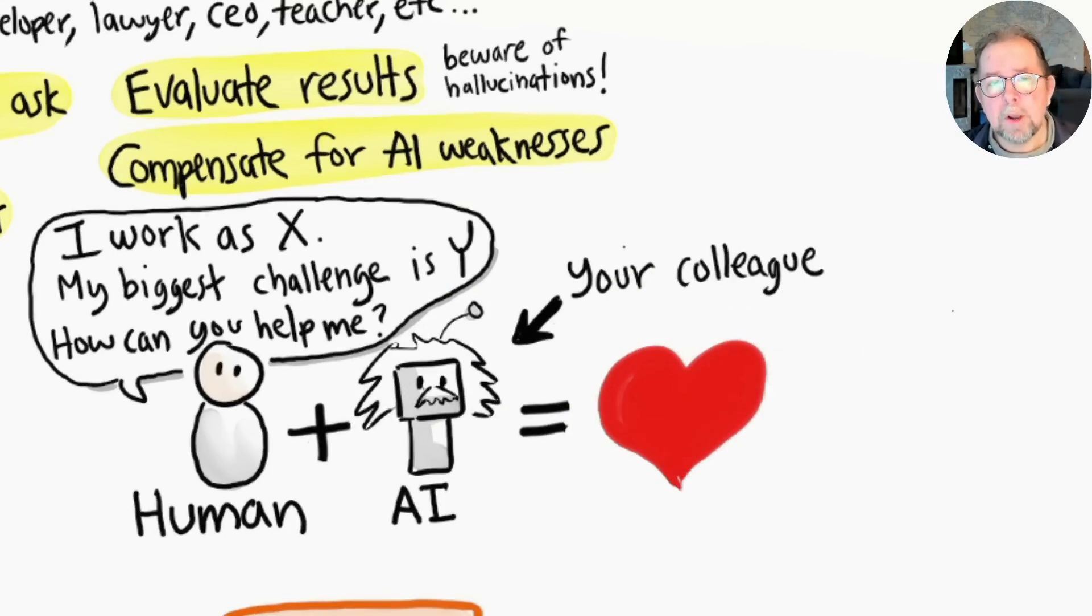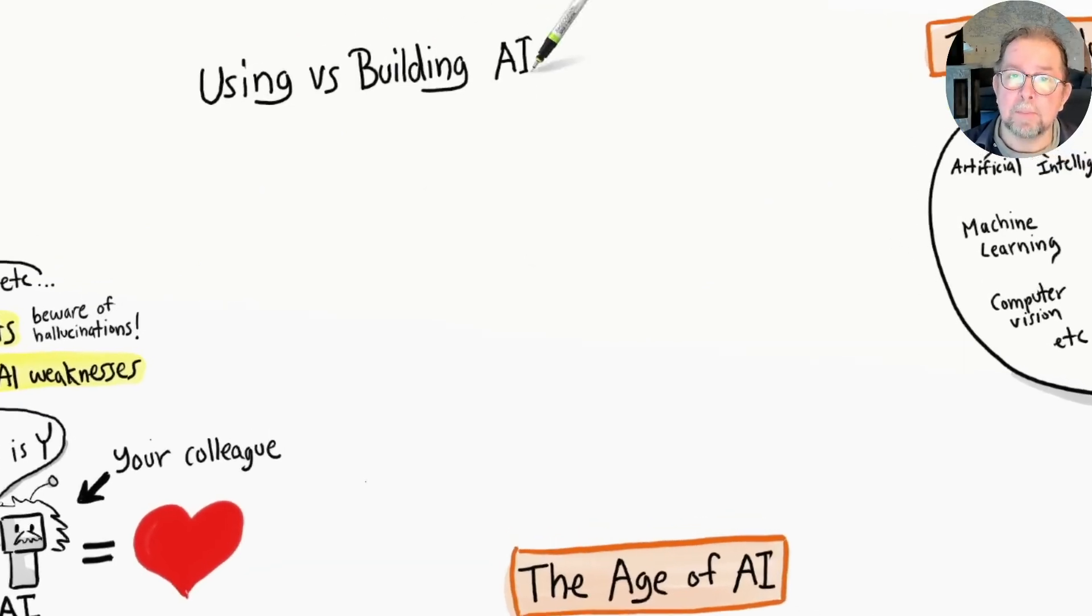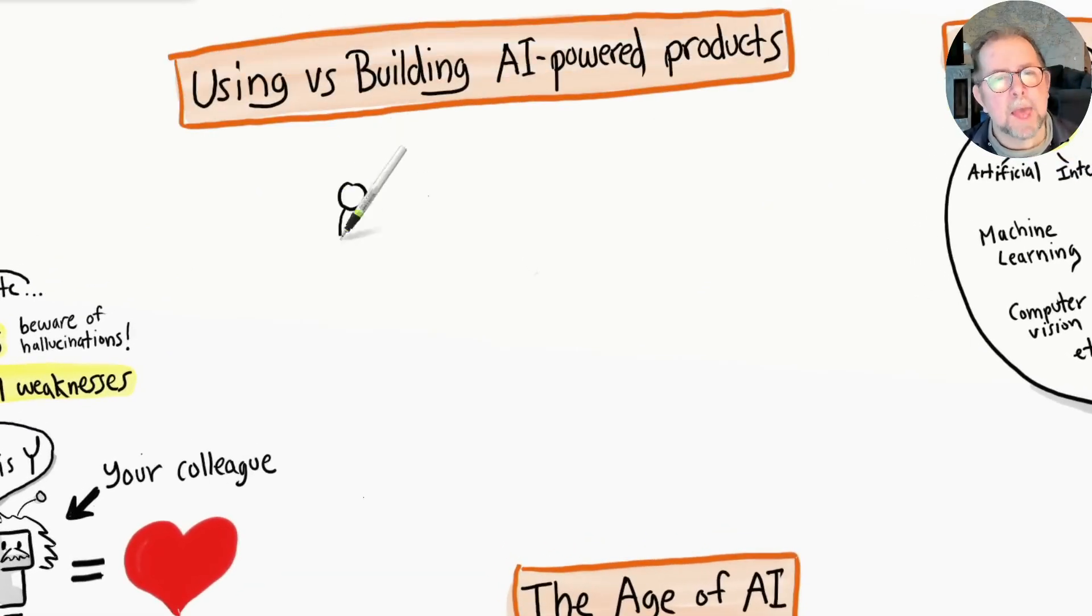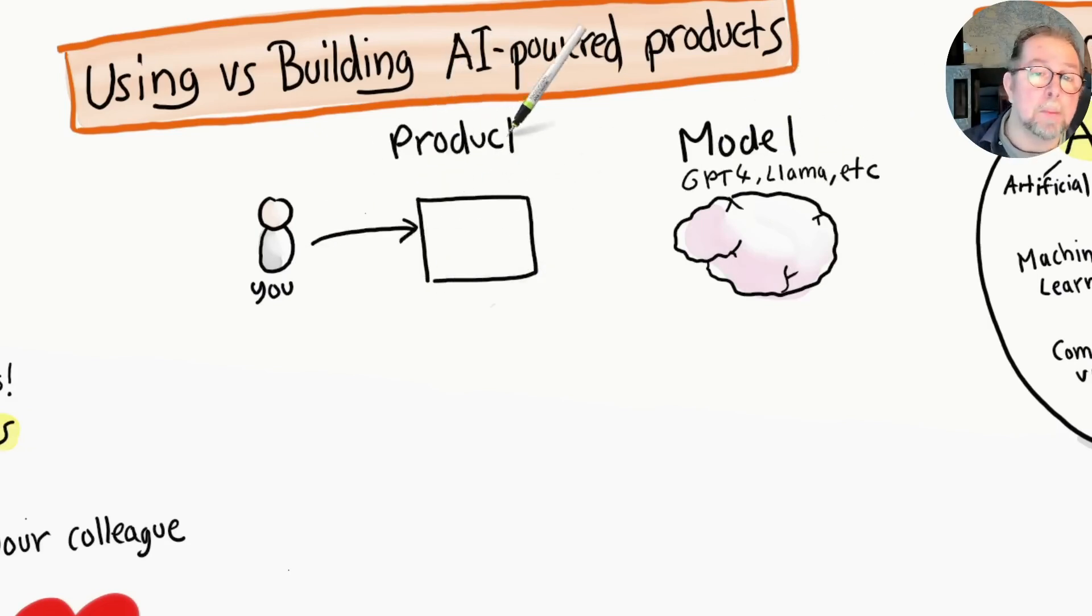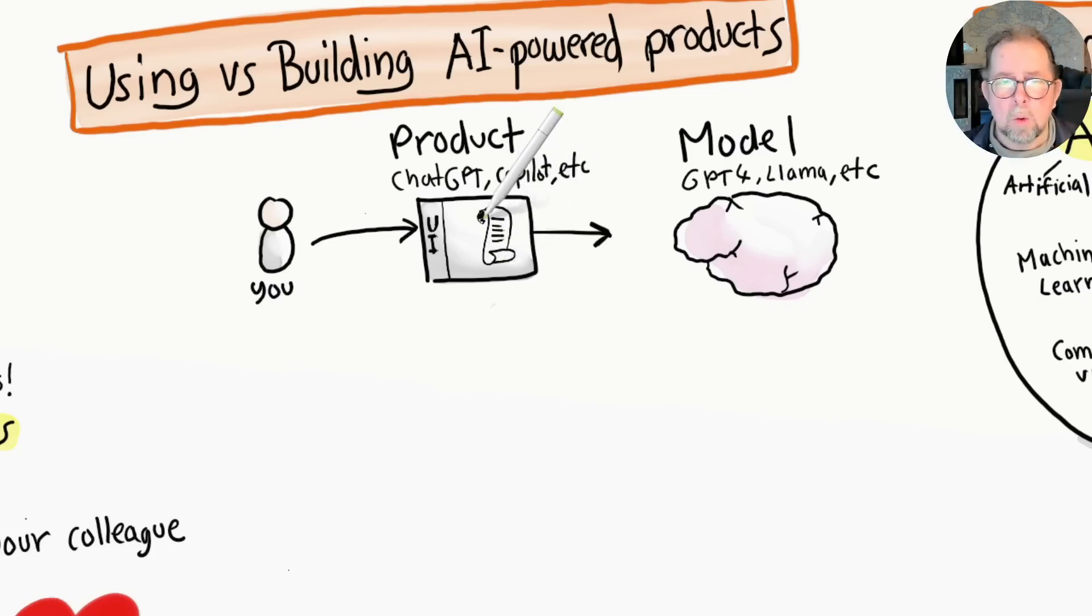It's important to distinguish between the models and the products that build on top of them. As a user, you don't normally interact with the model directly. Instead, you interact with a product - website or a mobile app - which in turn talks to the model behind the scenes. Products provide a user interface and add capabilities and data that aren't part of the model itself.